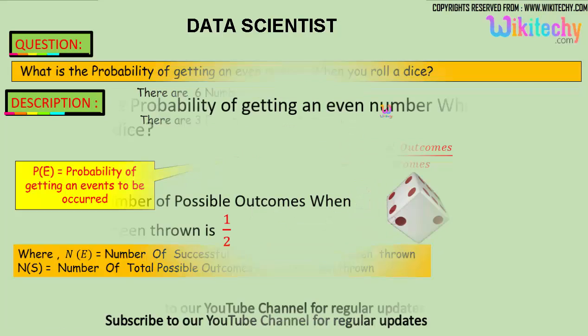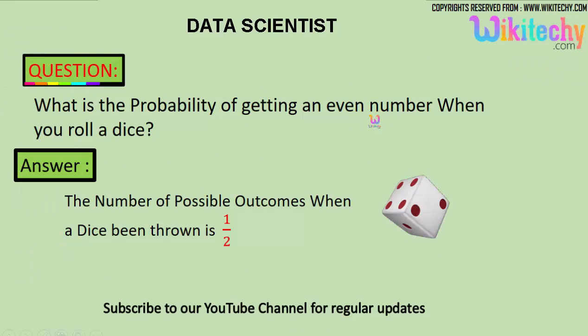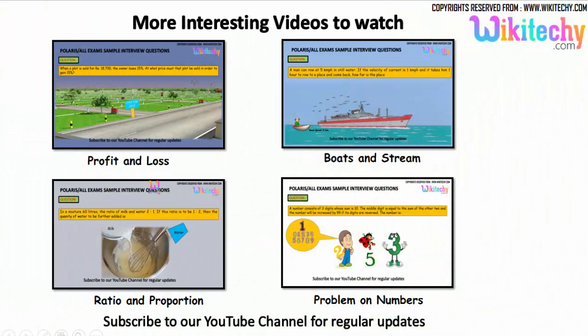So the number is one by two. The probability of getting an even number when you roll your dice is one by two. That's the answer. We got lots and lots of interesting interview questions for you.